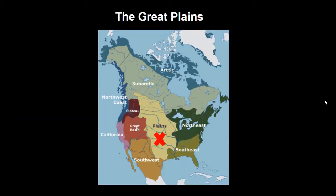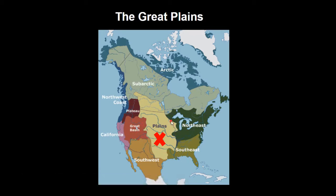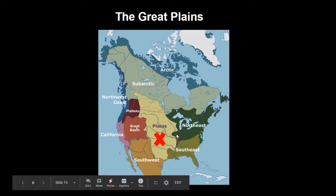The Great Plains were located between two important geographic features: the Rocky Mountains and the Mississippi River, the longest river in North America.